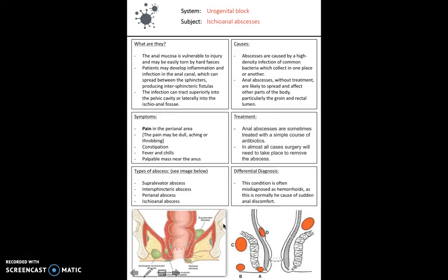Moving on, we were taught about ischoanal abscesses. An ischoanal abscess originates from an infection which arises in the epithelium lining the anal canal. The anal mucosa is a vulnerable place to injury and can be torn by hard feces.